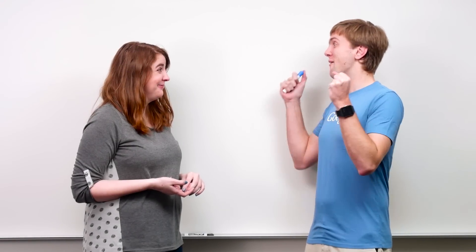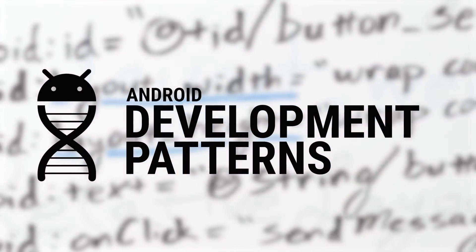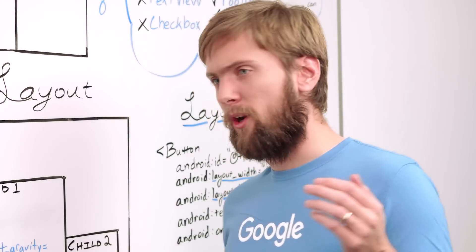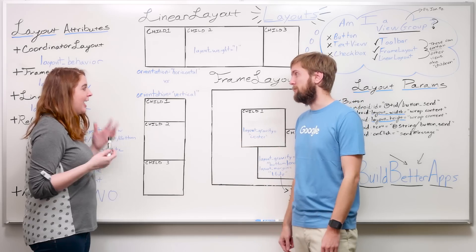All right, Joanna, let's write down everything about Android Layouts. So, to summarize, a view group is just a fancy name for a layout, a view you can add children to.